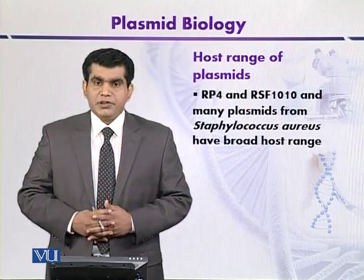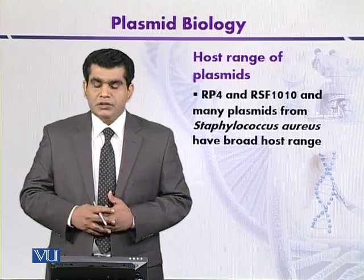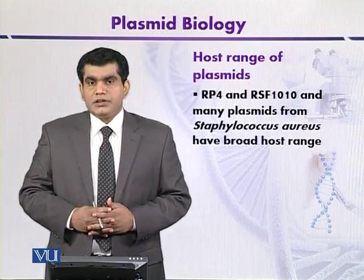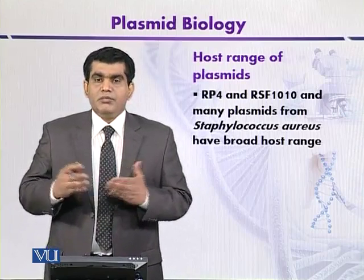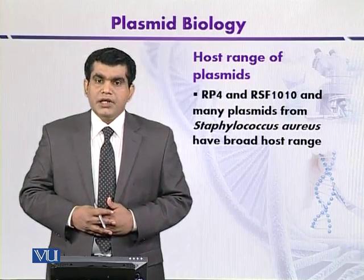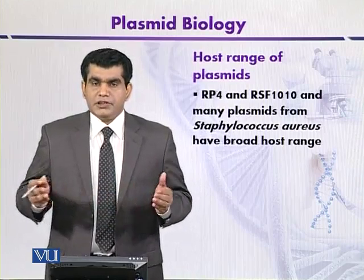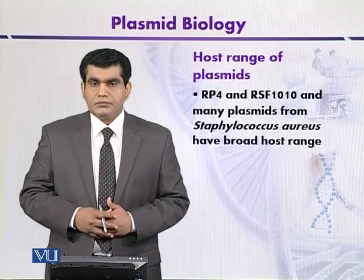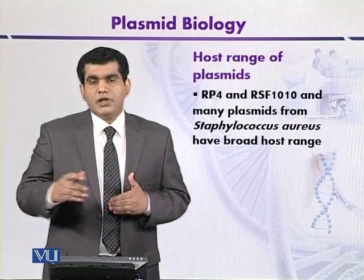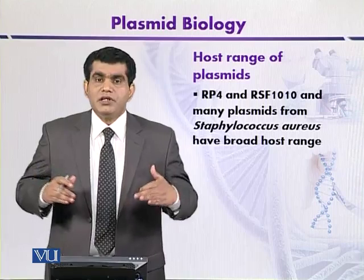Other plasmids like RP4 and RSF1010 have a slightly broader host range. For example, RP4 can be transferred among a variety of gram-negative bacteria, meaning DNA can be transferred from one gram-negative bacterium to another that is more or less taxonomically related.